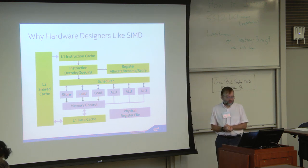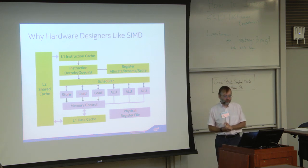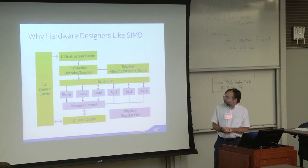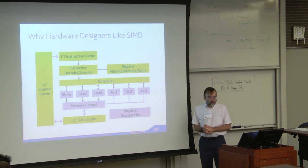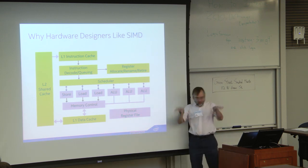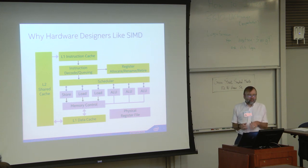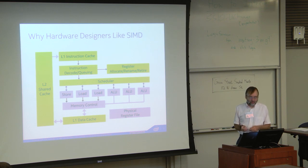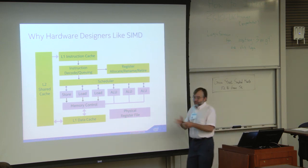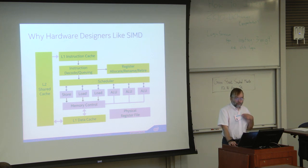Here's a diagram of a processor — no processor in particular; it resembles a real processor about as much as Bugs Bunny resembles a real rabbit. There are arithmetic and logic units, units for loads and stores, and a scheduler. The nice thing is that SIMD either leaves the boxes more or less unaffected or just makes them bigger. The green boxes are largely unaffected by SIMD, and the blue boxes just get wider. So for a gain in processing speed, it's a cheap trick for the hardware, and it's also very power efficient.